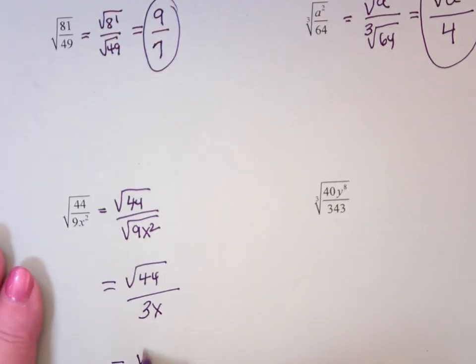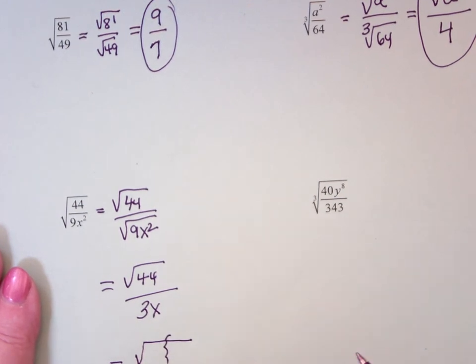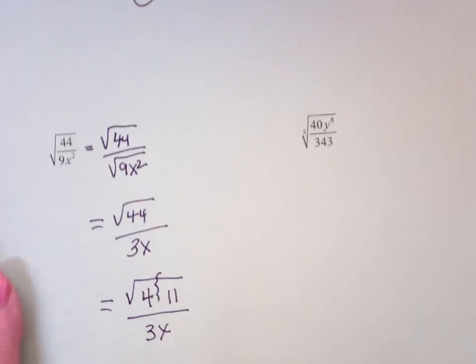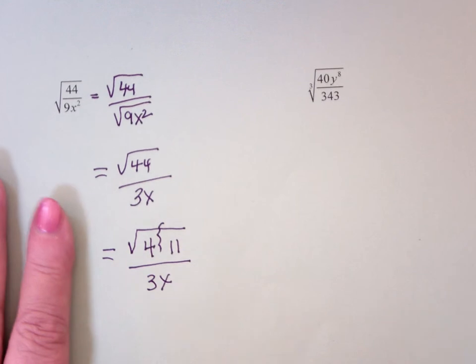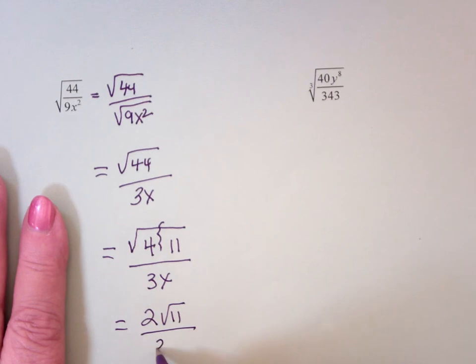So this is the square root of, you're going to have the square and the leftover, so I can simplify that radical. What's the square in 44? 4 and 11, so it's 4. And now, this becomes square root of 4 is 2, square root of 11 over 3x.